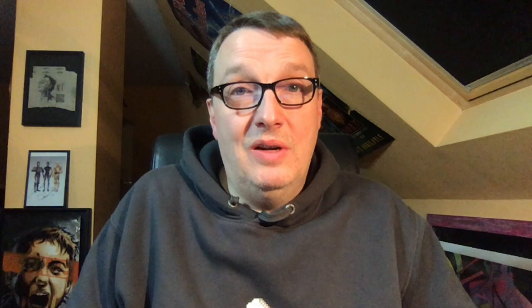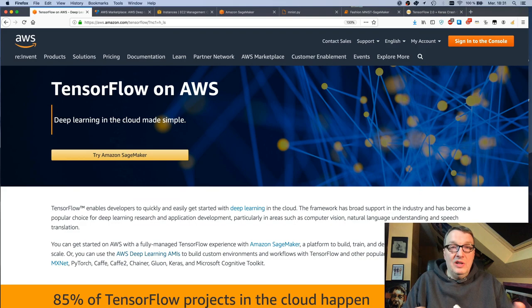So let's take a look at the different ways you can do that. The first one is to run it on an EC2 instance. To make it simple, we've built those Deep Learning AMIs. If you've never heard about AMIs, that means Amazon Machine Image, and it's basically the binary file that is used to create virtual machines on Amazon EC2.